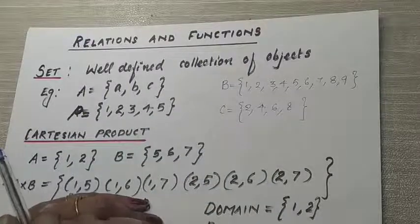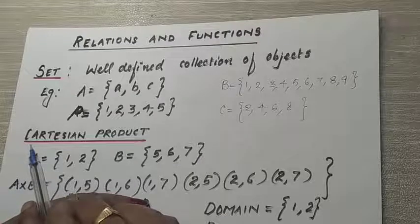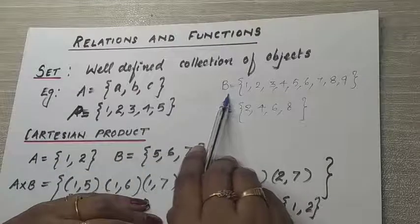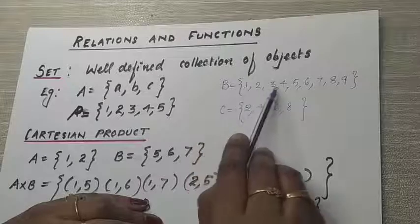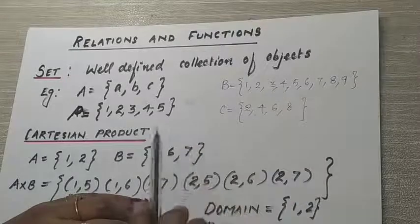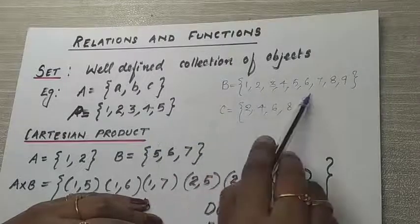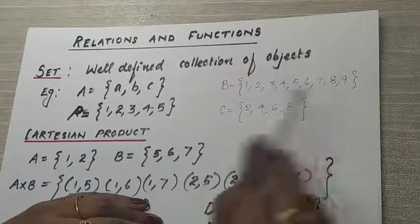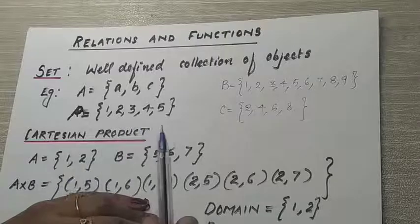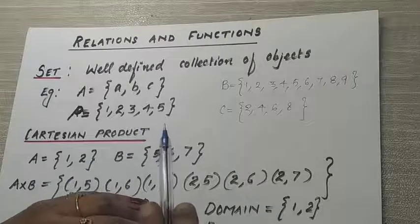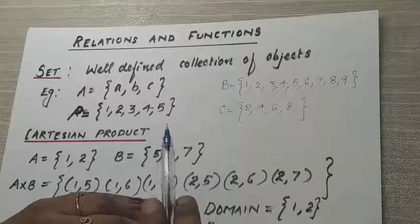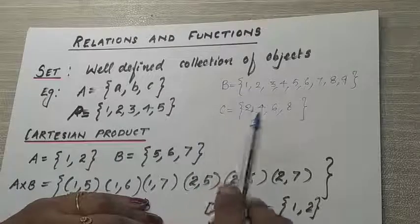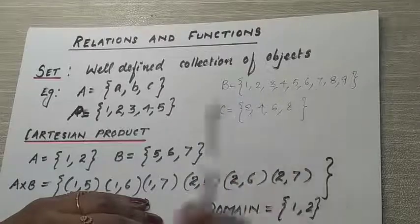What is meant by a well-defined collection? For example, if I write one of the sets as {1, 2, 3, 4, 5, 6, 7, 8, 9} — these are the natural numbers less than 10. If I say to 40 students 'write the natural numbers less than 10,' everyone will be writing these same numbers.